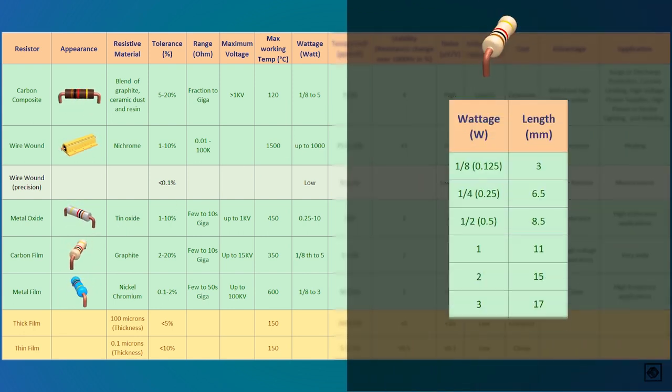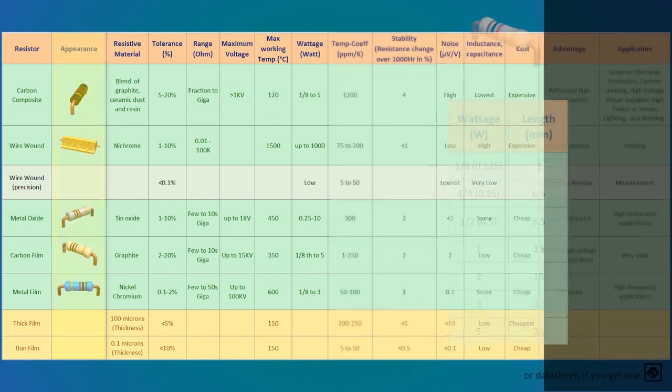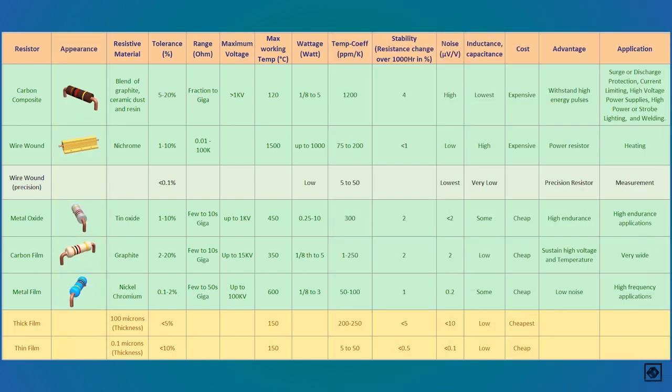The wattage of resistors can be identified by the size, and you can identify most of the resistors by their appearance and color. But they are not a standard. Some manufacturers may have different sizes and shapes, but this may work for most of them, or look at the manufacturer's datasheet for precise details.